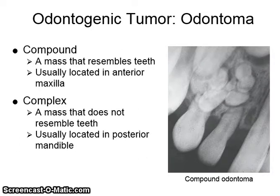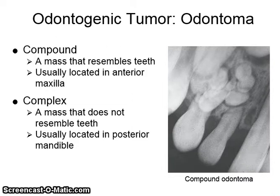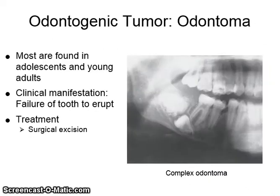Odontoma. A compound odontoma is a mass that resembles teeth and is usually located in the anterior maxilla. A complex odontoma is a mass that does not resemble teeth and is usually located in the posterior mandible. Most are found in adolescents and young adults. The clinical manifestation is failure of a tooth to erupt. It is treated with surgical excision.